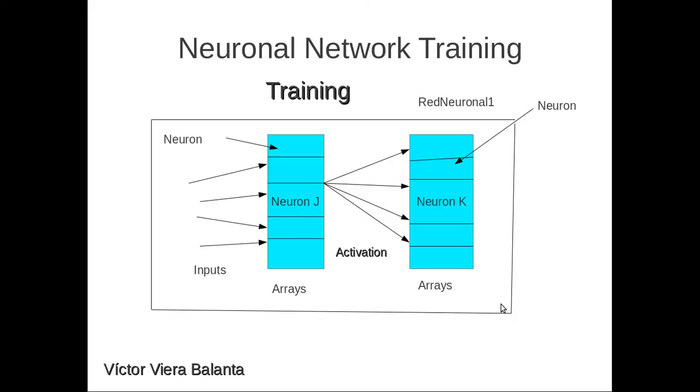This is the program. The program has arrays. Each array has neurons, activation, and layers J and inputs. This is the configuration of the neural network.